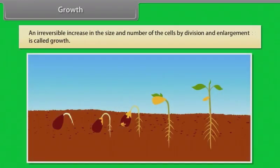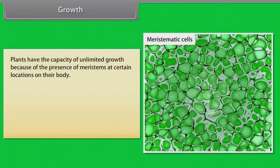An irreversible increase in the size and number of cells by division and enlargement is called growth. In plants, the growth generally is indeterminate. Plants have the capacity of unlimited growth because of the presence of meristems at certain locations on their body.